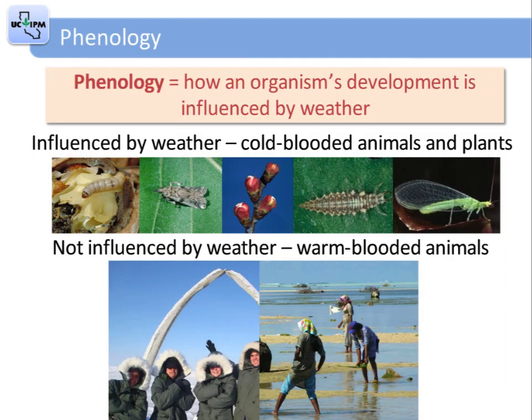Let's define a few terms important to understanding Degree Days. The first is phenology — the study of an organism's development and how it's influenced by weather. Ambient temperature influences the development times of cold-blooded animals and plants. For example, as temperature warms in the early spring, trees start to bloom. Being cold-blooded, insects and mites do not regulate their internal temperature. Instead, their development is dependent on the temperatures they are exposed to. Because of this, temperature affects when an insect will go through its various life stages.